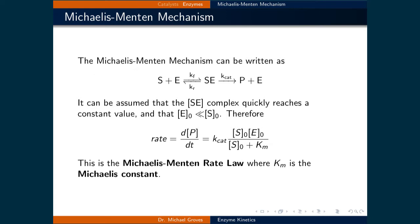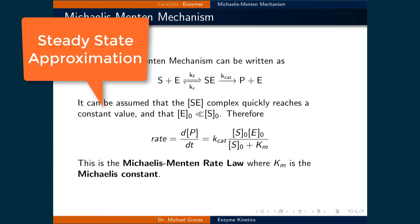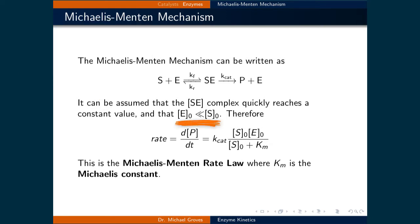It can be assumed that the concentration of the substrate enzyme complex quickly reaches a constant value, meaning the steady state approximation holds, and under the case that the initial concentration of the enzyme is much less than the initial concentration of the substrate.